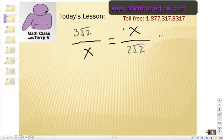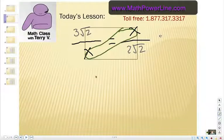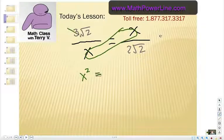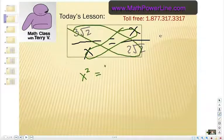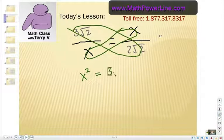Alright, so we have cross products here. And if we look at our two x's there, we're going to multiply those together and get x squared. Now, in the other case, these cross products give us 3 radical 2 times 2 radical 2.